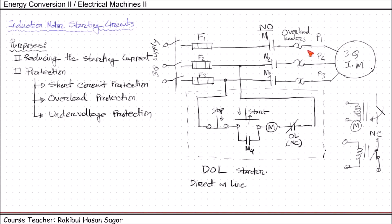If due to any fault a short circuit current occurs, these three fuses will be blown up — giving short circuit protection. For under voltage protection: when the supply is less than the rated voltage, the current flowing through the coil will be less than normal. If the current is less, the energizing coil will not get enough current to remain energized, so it will release the switch and the switches will be disconnected. In this way we can have under voltage protection as well. We'll continue in the next class on how to reduce the starting current.